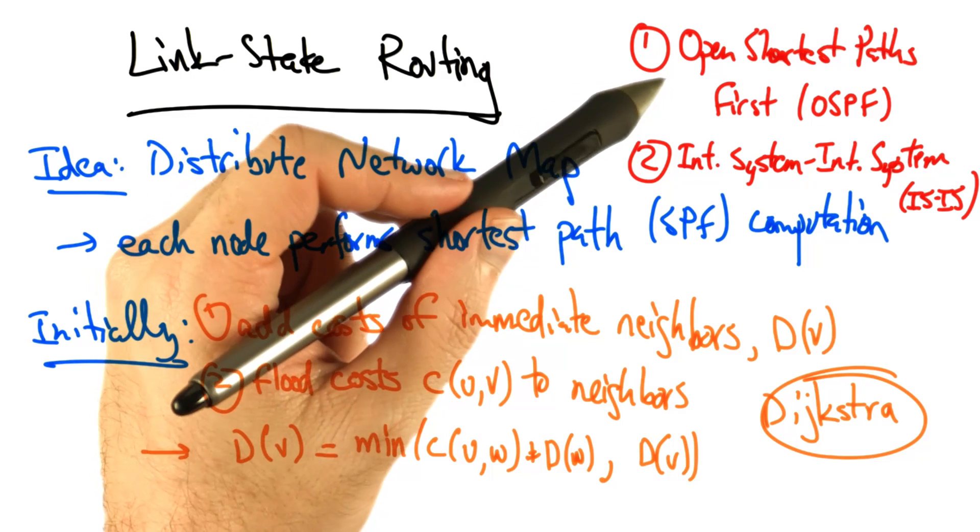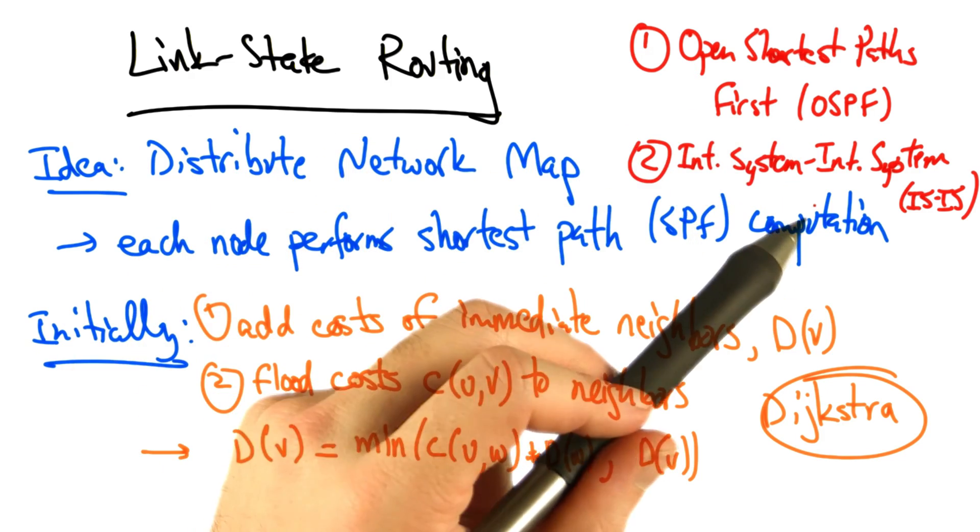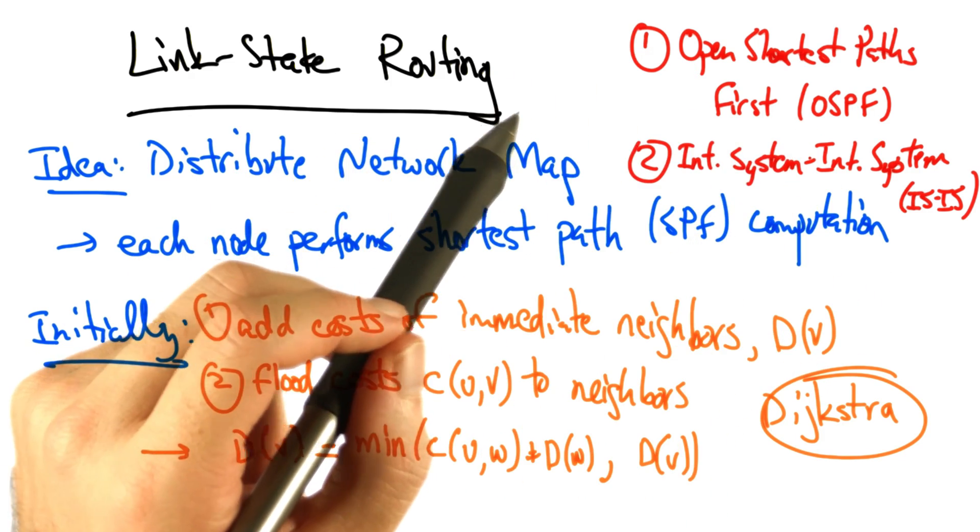Two common link state routing protocols are open shortest paths first, or OSPF, and intermediate system intermediate system, or ISIS.